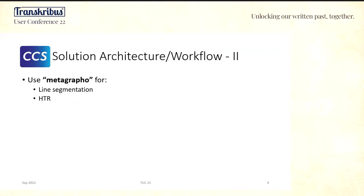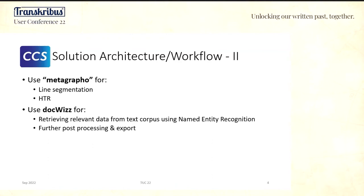Then the data is put through the new Metagrapho API — this is where the Transkribus part comes in. It performs the line segmentation, since we had already recognized the whole paragraph, and the main job is to do the HTR. With the text we get back, we import it into our own software, apply named entity recognition to identify names, do full-text post-processing, and then export — this is how we process the workflow.